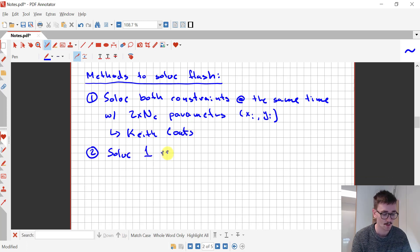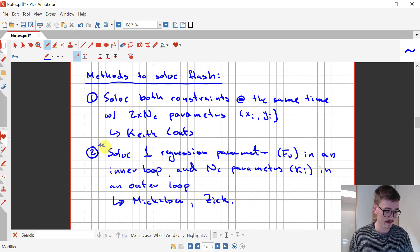The second approach solves for one parameter, fv, in an inner loop and nc parameters, which are the k values, in an outer loop. This is the most common method to solve. Examples of this are given by people like Mikkelsen and Aaron Zick. And this is the one we're going to be looking at in the next couple of weeks.